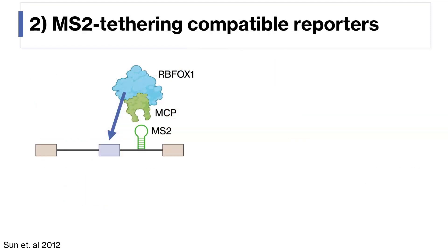We're interested in RBPs, and specifically we want to do a survey over a large number of RBPs to see how they might influence splicing. MS2 tethering assays work by co-expressing a reporter with the MS2 RNA sequence alongside a protein of interest fused to the MS2 coat protein, or MCP. The MS2 sequence forms a secondary structure that's bound by MCP with high affinity, bringing the protein of interest to a known position where we can measure the effects at that position.